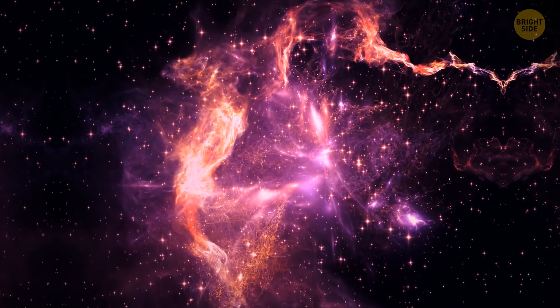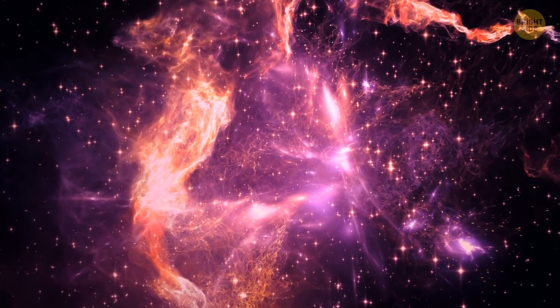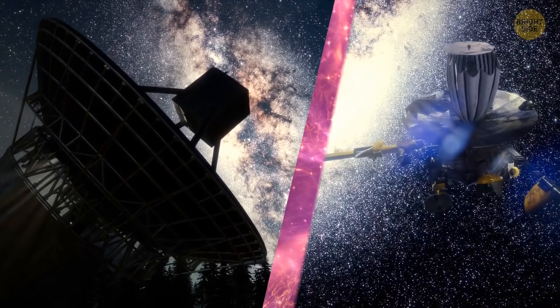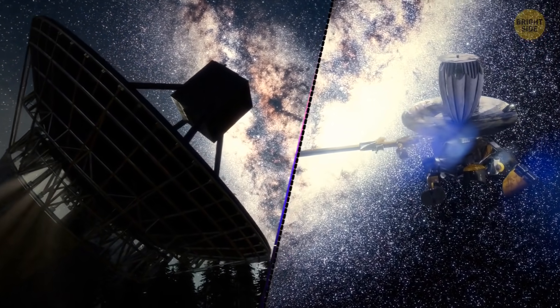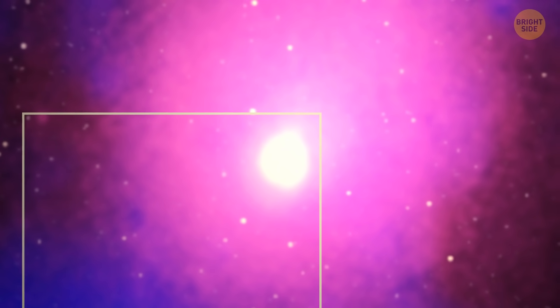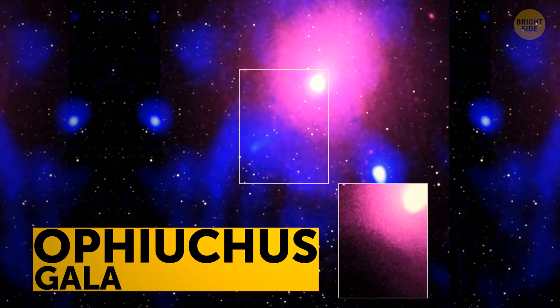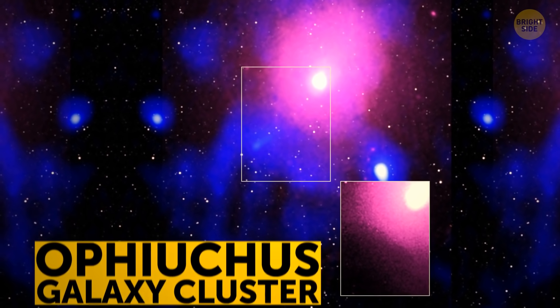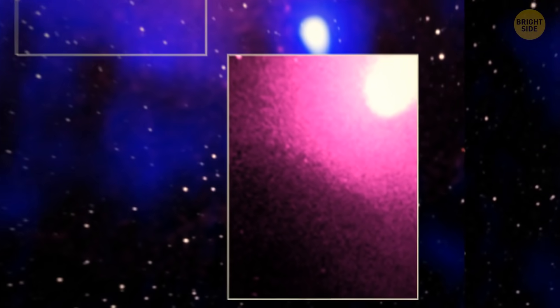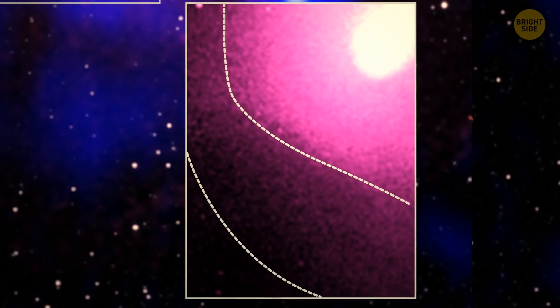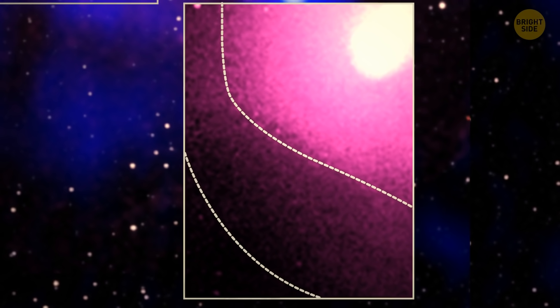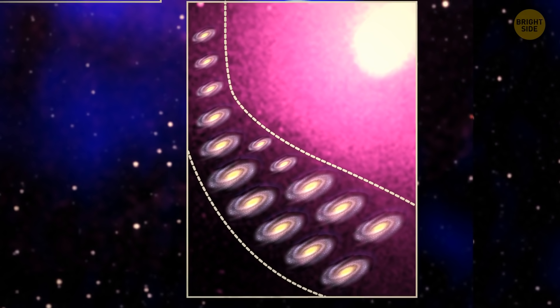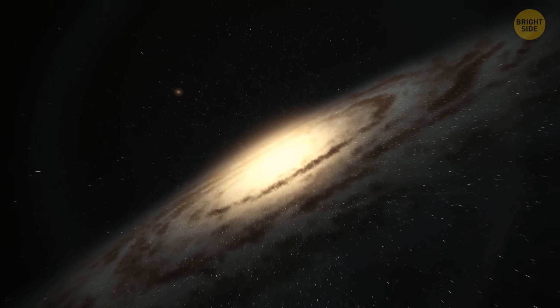A short while ago, scientists discovered one of the largest craters in the universe. Radio and X-ray telescopes detected a supermassive black hole that threw a temper tantrum many, many years ago. It happened in a galaxy cluster about 390 million light-years away from Earth. The crater left behind, which was actually a hole punched in the cluster's hot gas, could fit 15 Milky Way galaxies. Whoa.